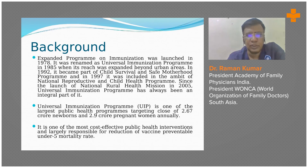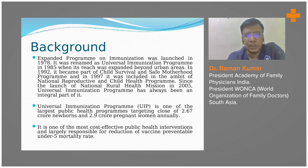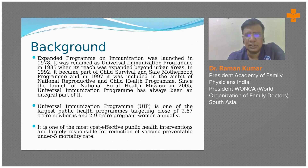The Universal Immunization Program is one of the largest public health programs not only in India but across the world. It targets close to 2.67 crore newborns and around 3 crore pregnant women annually. It is a humongous work of the government's public health system, considered one of the most cost-effective public health interventions, and is said to be largely responsible for reduction of vaccine-preventable under-5 mortality rate.